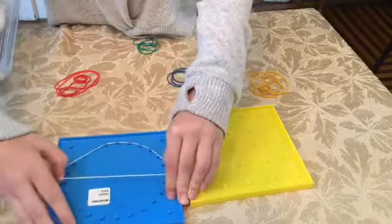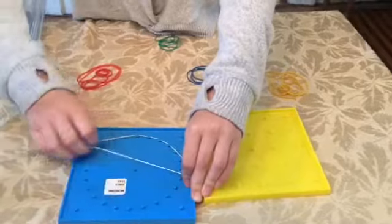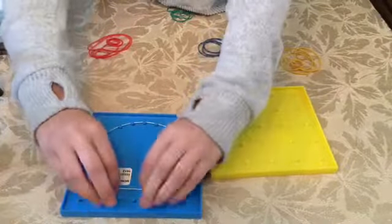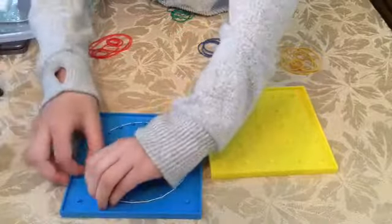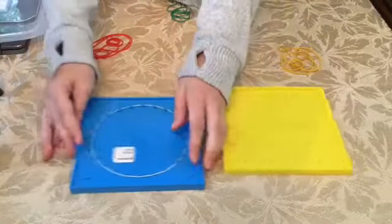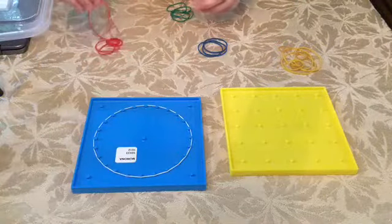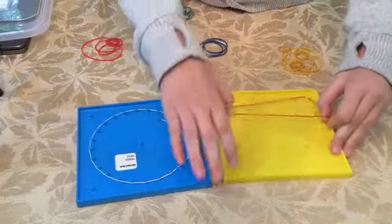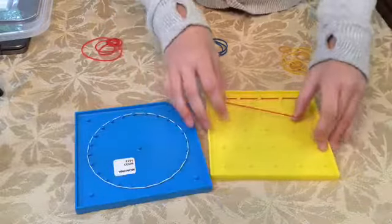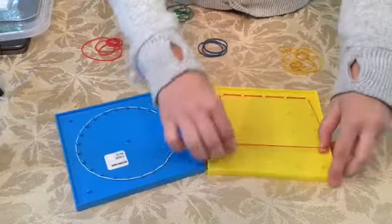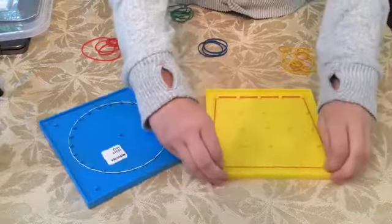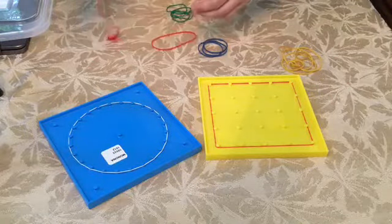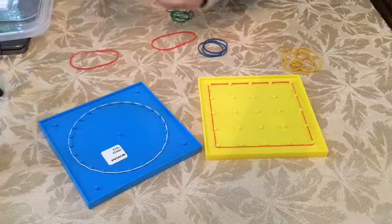There she's making a circle using a white rubber band on the blue board. Can you use the red rubber band and make a big square and a small square? Make a red square on the yellow board, make a big square, and using red make a small square. So she has to choose which size rubber band would work best.